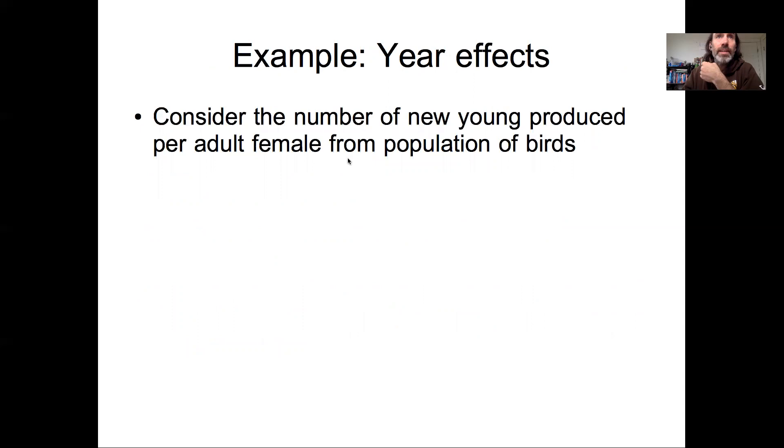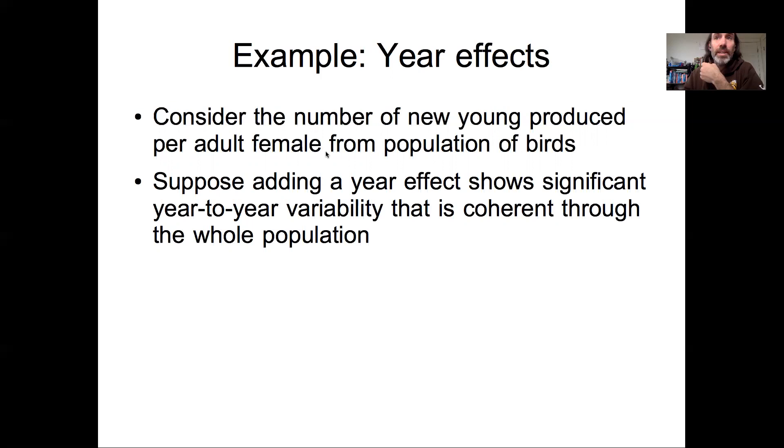So to think about this as an example, consider the idea that you're looking at some number of new young produced per adult female from a population of birds. And then you add a year effect that shows significant year-to-year variability that is coherent through the whole population.